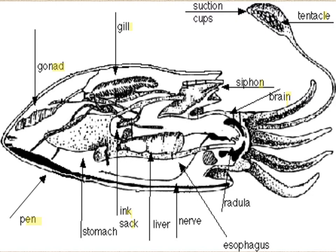On the squid, make sure you know that the mouth is called the beak. Be able to identify the gills, the gonads, the pen — which is the internal skeleton — the ink sac, the siphons, the brain, and the antennas. Be able to identify the tentacles with their suction cups.